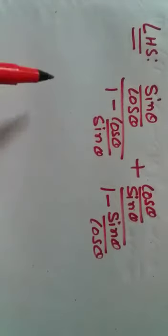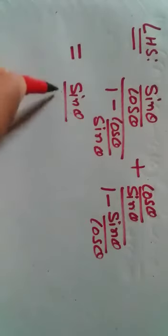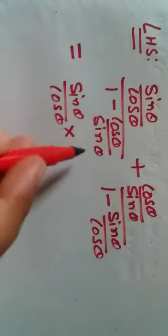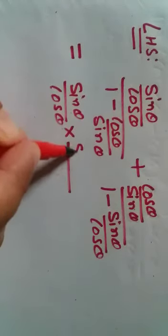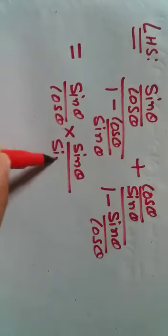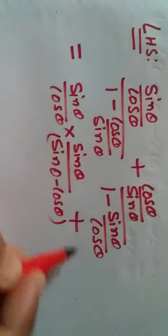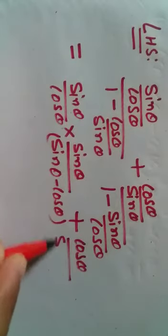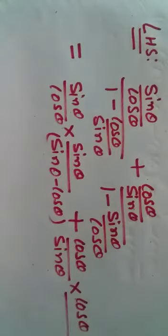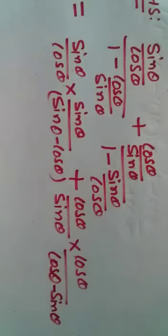Now let us arrange this. Taking the LCM, the first term becomes sin θ/(sin θ minus cos θ), and the second term becomes plus cos θ/(cos θ minus sin θ).